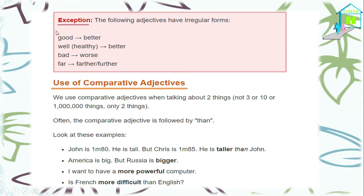Next, we have some exceptions. The following adjectives are irregular forms, which means we cannot apply the general rule of adding -ER. For 'good,' the comparative form is 'better' — we cannot say 'gooder.' For 'well,' it also becomes 'better,' since well and good have the same comparative. For 'bad,' the comparative form is 'worse.' For 'far,' the comparative forms are 'farther' or 'further.' These are exceptions with their own rules — they are irregular forms.